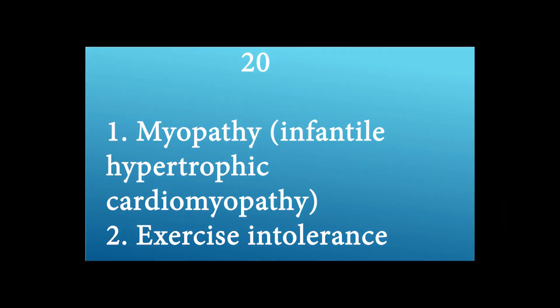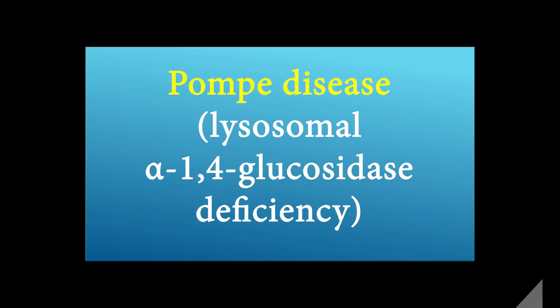Name the disease and enzyme deficiency with these presentations: 1. Myopathy and infantile hypertrophic cardiomyopathy. 2. Exercise intolerance. The diagnosis is Pompe disease, caused by lysosomal alpha-1,4-glucosidase deficiency.